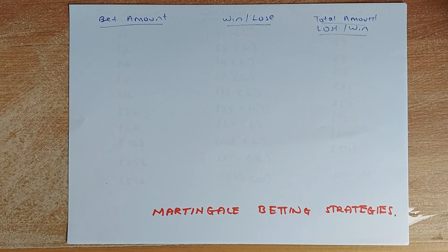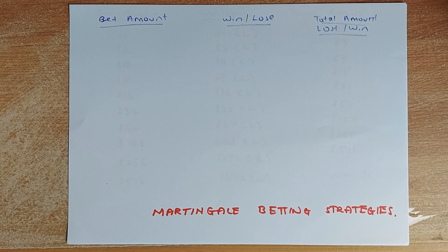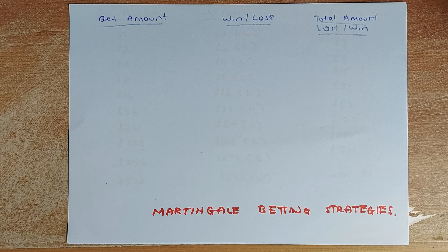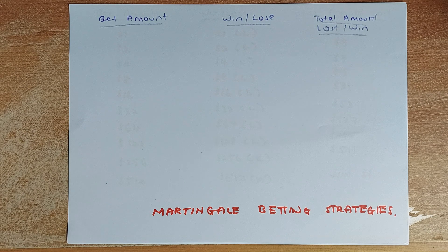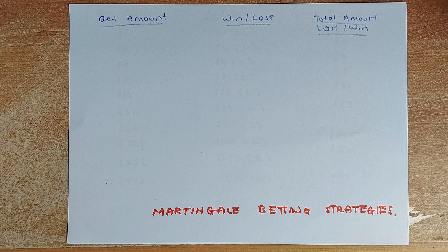Hello, good morning everyone, this is Mr. Ong here again. Today we are going to learn something slightly different from what we have done before. We are using the Martingale betting strategies and we are using mathematics to help to win in a betting situation. This is called a doubling up method — it's not to teach you how to gamble, but to teach you some mathematics behind the gambling technique.